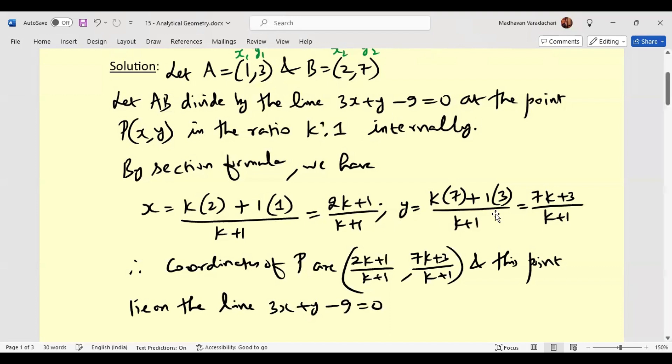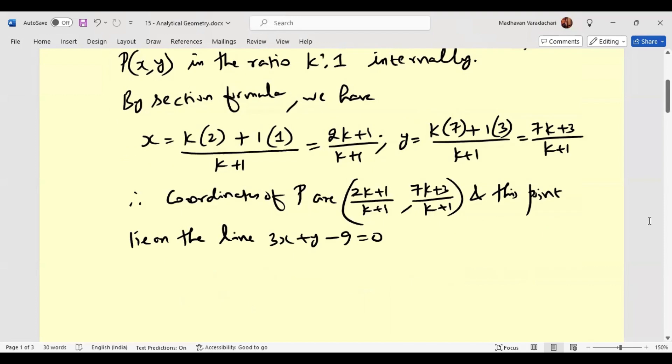Why? Because this point is dividing this particular line at that point. So this equation should satisfy these coordinates, which means that we can say 3 times (2k plus 1) by (k plus 1)